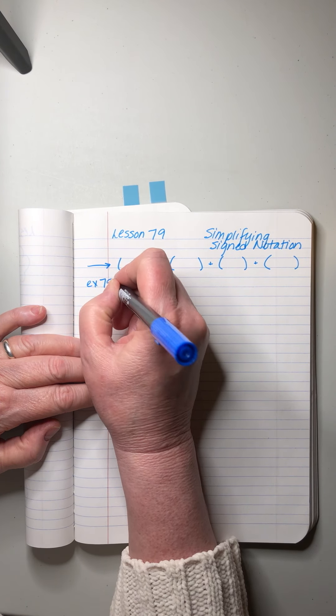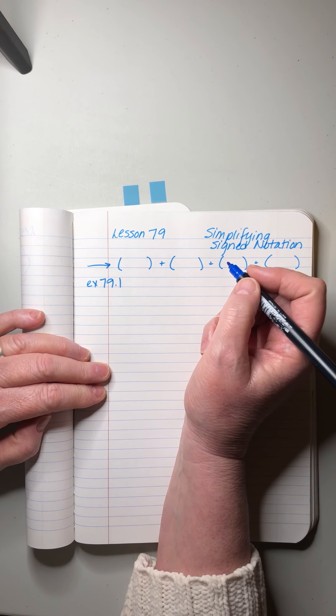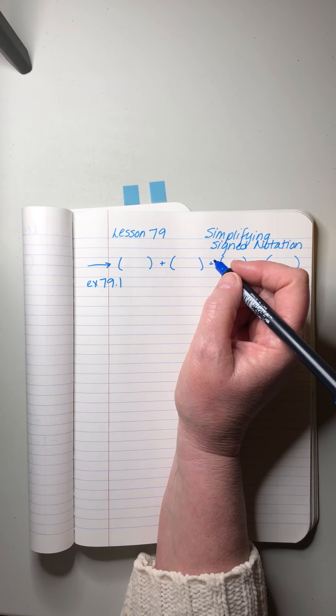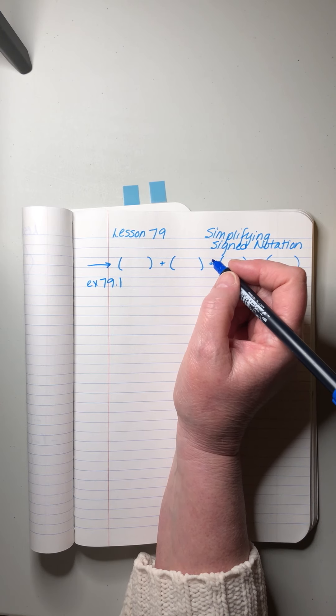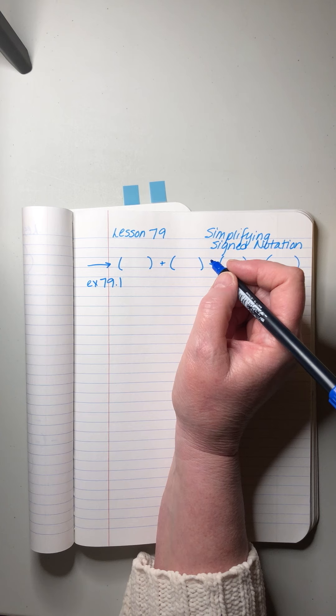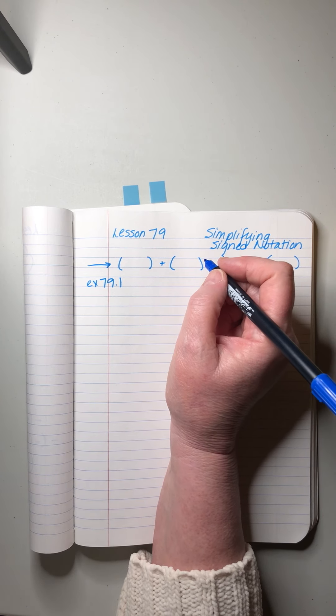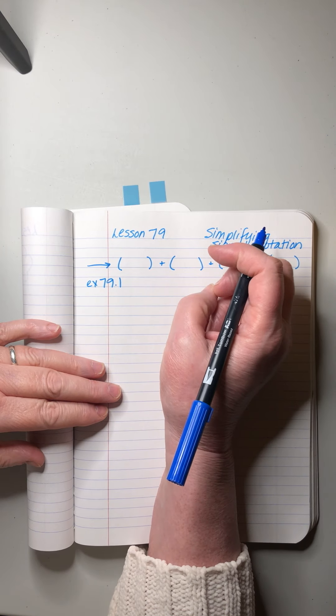If you find this really easy to do, this adding and subtracting, I get it, and this is probably going to seem tedious and boring to you. But I'll tell you what, so many mistakes get made by just rushing through these. It is so easy to make mistakes.